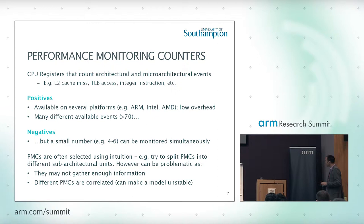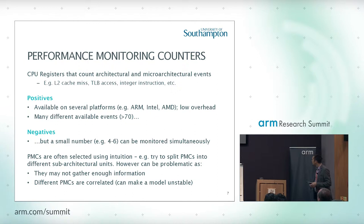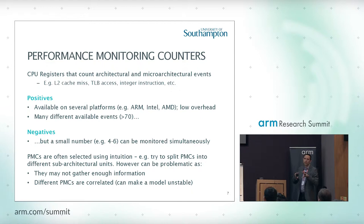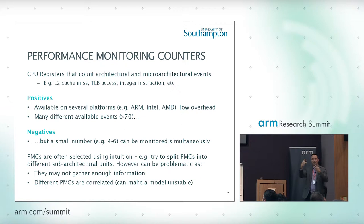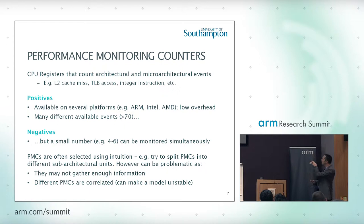In the literature, performance counters are often selected either through intuition — thinking about what might contribute to power — or by throwing lots of data at a regression model and seeing which fit. The problem is you may gather a narrow set of information for the workloads you're training with. Also, you might pick counters that are highly correlated in what they're measuring. If two counters are very similar and you use both, a completely different workload could exercise them differently, and unless you've tested with every workload, you're unlikely to get a stable model.